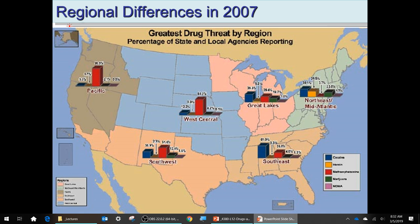These are the different clandestine labs by region. The blue is cocaine, orange is heroin, red is methamphetamine, green is marijuana, and pink is ecstasy. There's a big difference: cocaine is dominant in the Southeast, methamphetamine in pretty much all of the West, and heroin is more prevalent in the Northeast.